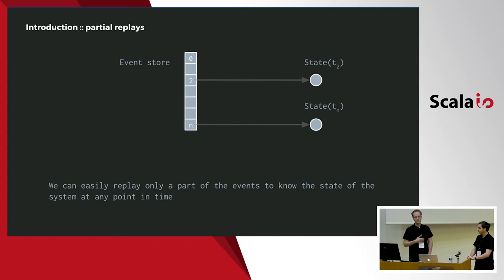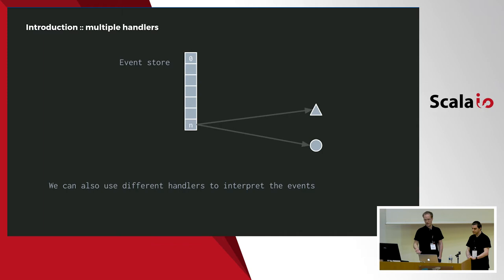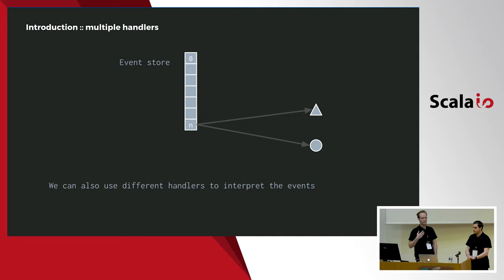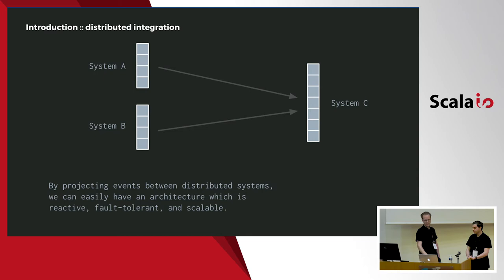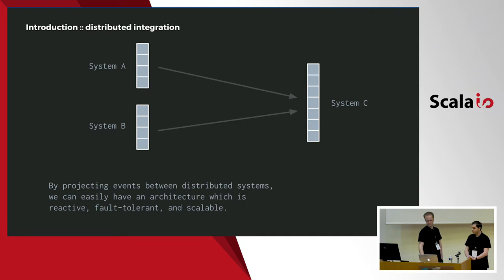So why should we bother? Using event sourcing has several interesting properties. All changes are reified and remembered, so we can easily make a partial replay to know all previous states of the system — we get audits for free. Another advantage is that we can introduce new event handlers, even post hoc on years of production events, to compute new things we didn't think about initially. And it's much easier to integrate distributed systems when they are event sourced because we can reason about causality and achieve reactive architectures.